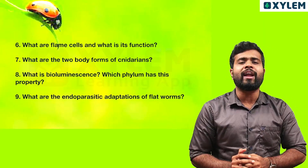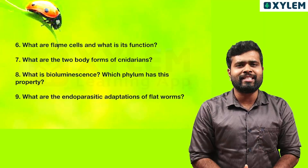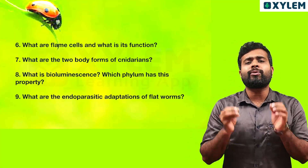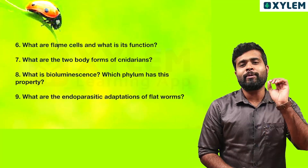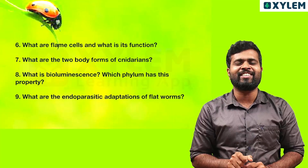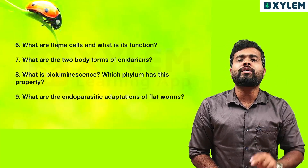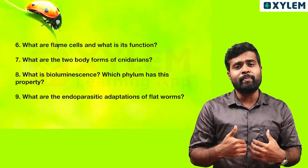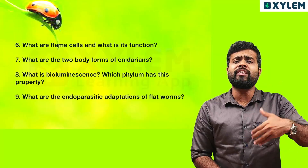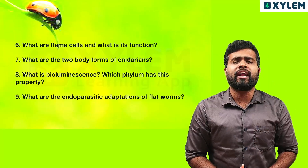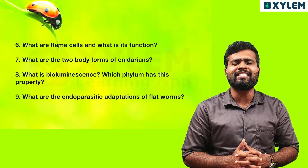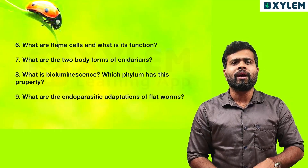Next question: what are the endoparasitic adaptations of flatworms? The majority of Platyhelminthes are endoparasites. Their parasitic adaptations include: hooks and suckers for attachment, a poorly developed digestive system since they absorb nutrients from the host, and a high rate of reproduction capacity. These are the endoparasitic adaptations.